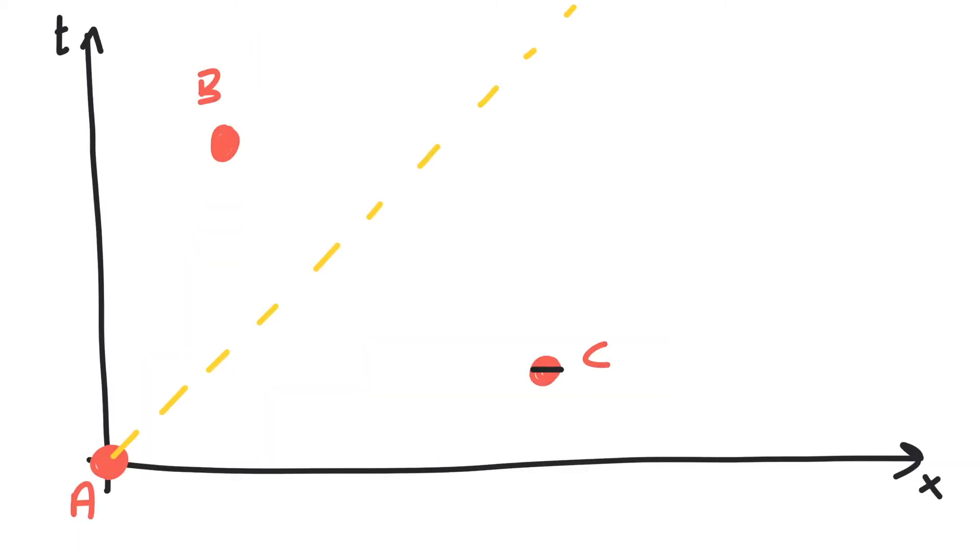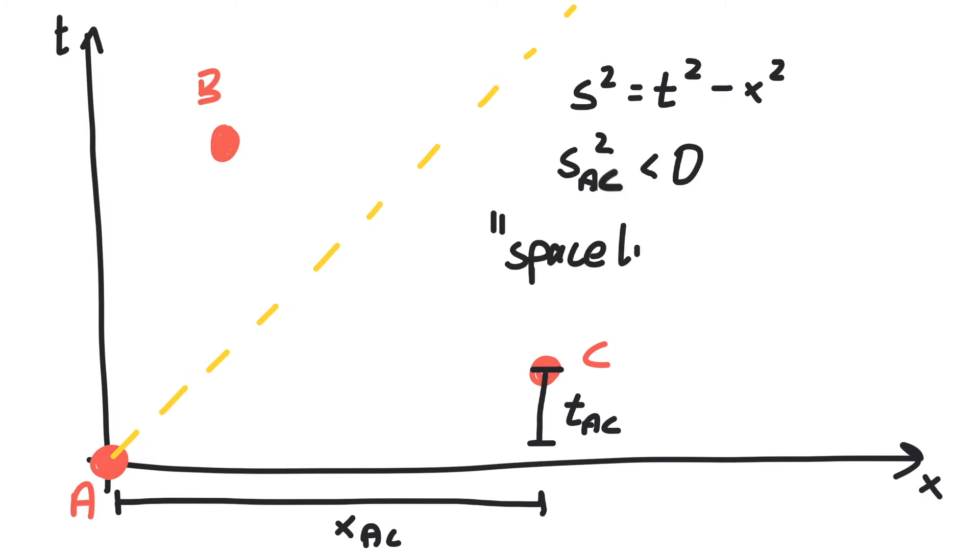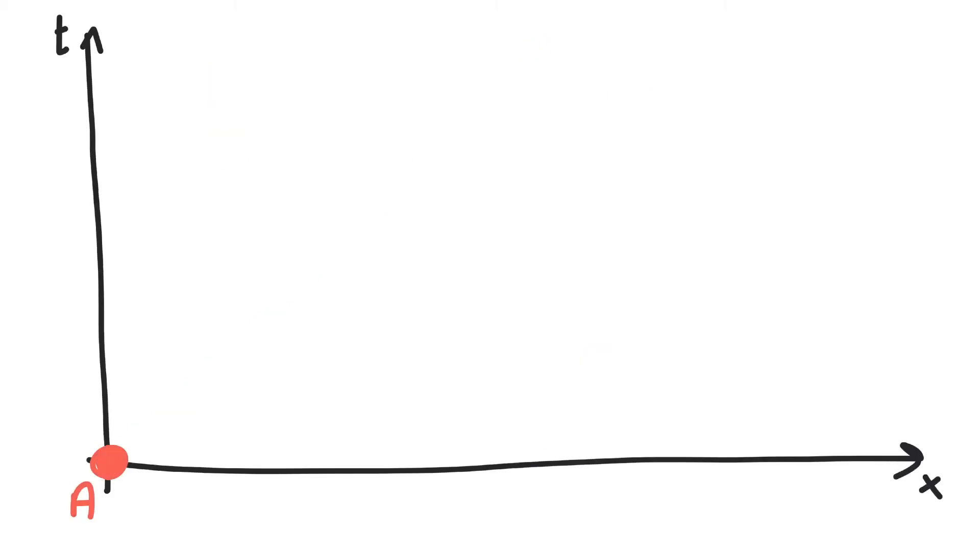Now onto A and C. Here the spatial component is greater than the time component. We can draw a frame where A and C happen at the same time, but none where they happen to be at the same position.